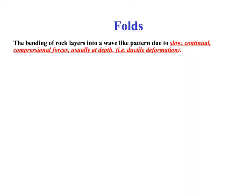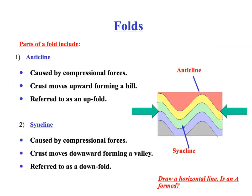If rocks don't break, they bend, and you typically get folding when the forces are compressional and very slow. This usually takes place at depth because we're essentially talking about ductile deformation, whereas faulting — the actual breaking of rocks — is more brittle deformation. There are two kinds of folds: up folds and down folds. Up folds form an A — A stands for anticline. The other is a U — think of synclines. So down folds are synclines and up folds are anticlines. Both form from compression.